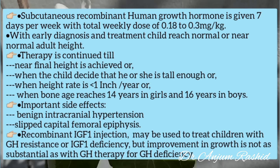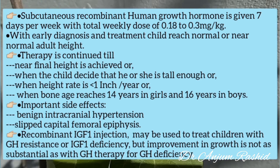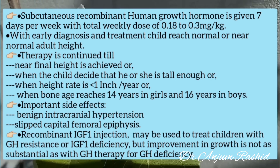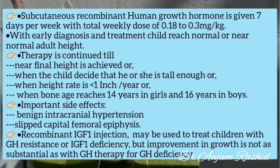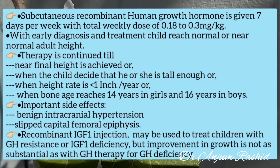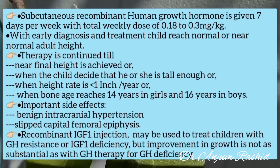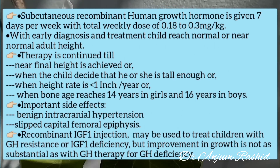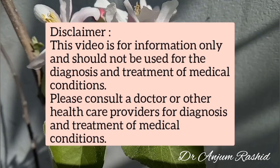Important side effects of recombinant human growth hormone include benign intracranial hypertension and slipped capital femoral epiphysis. Another treatment option is recombinant IGF-1 injection, used for children with growth hormone resistance or IGF-1 deficiency, though improvement in growth is not as substantial as with growth hormone therapy.